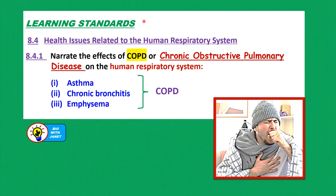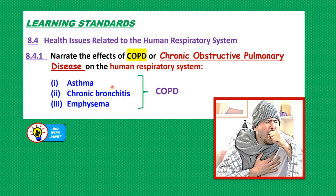The learning standards for today's lesson are as follows. 8.4 Health Issues Related to the Human Respiratory System. We should be able to explain the effects of COPD, or Chronic Obstructive Pulmonary Disease, on the human respiratory system. The diseases we're going to discuss are asthma, chronic bronchitis, and emphysema.